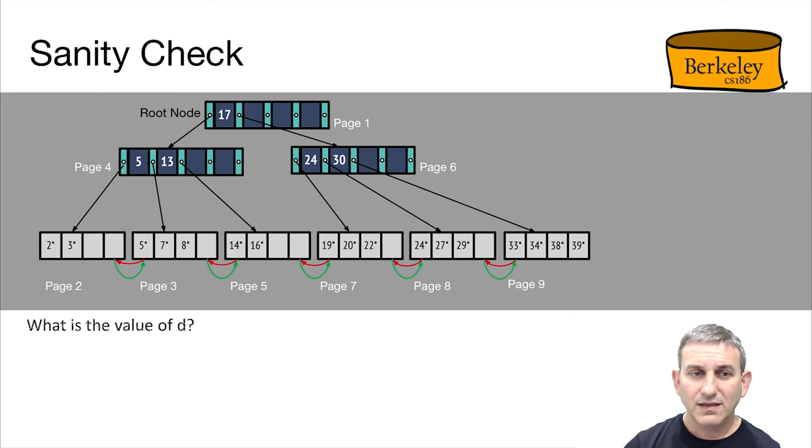What is the value of d in this example above? Well, we see that there's as many as five pointers per page, and we know that's 2d plus 1 equals 5. So 2d is 4, and therefore d must be 2. So this is a B-tree of order 2.